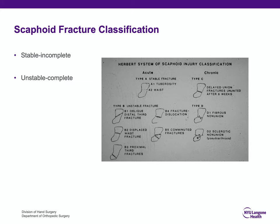Timothy Herbert, who invented the Herbert screw — one of the first scaphoid screws used to fix scaphoids — had a classification where he classified scaphoid fractures into stable fractures that were incomplete (not all the way through) and unstable fractures which were complete fractures all the way through. He stated back in the 1980s that all unstable or complete fractures needed fixation with the Herbert screw.